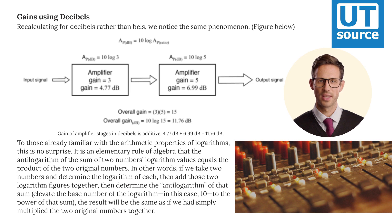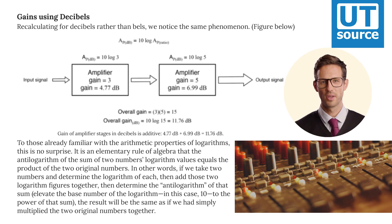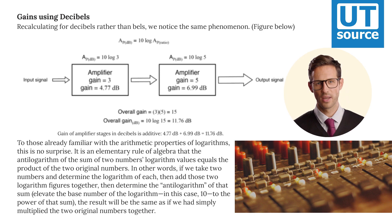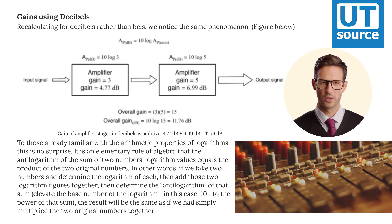In other words, if we take two numbers and determine the logarithm of each, then add those two logarithm figures together, then determine the antilogarithm of that sum — elevating the base number of the logarithm, in this case 10, to the power of that sum — the result will be the same as if we had simply multiplied the two original numbers together.